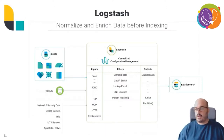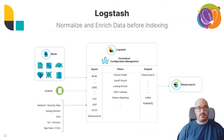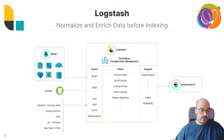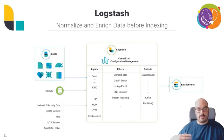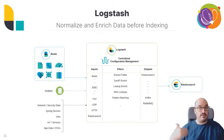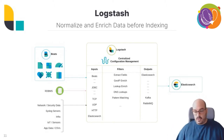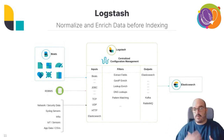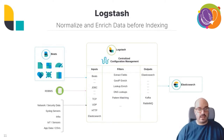Logstash is more like an ETL process that typically runs on its own server. It connects to different inputs — other beats, databases, log files, IoT sensors, and CSVs. Through filters it extracts and enriches data; for example, IP addresses can be converted into locations. It runs processes to manage and convert data into something ready to use in Elasticsearch, but it can also output data to other software as well.